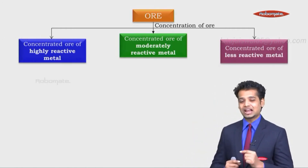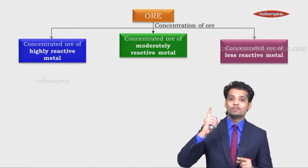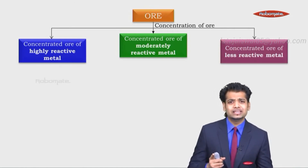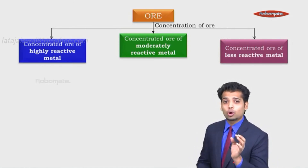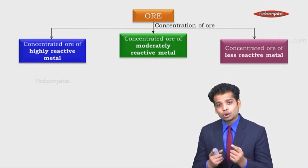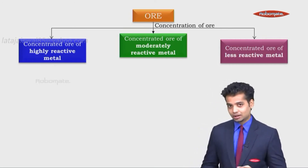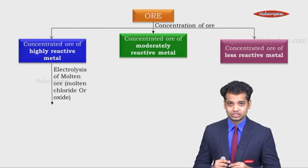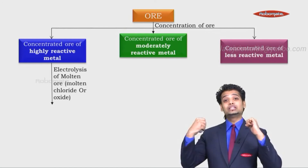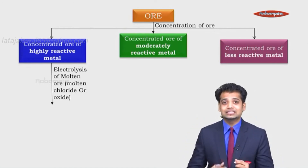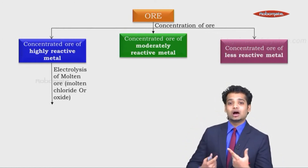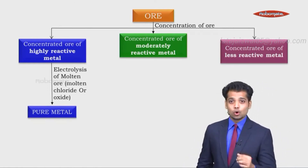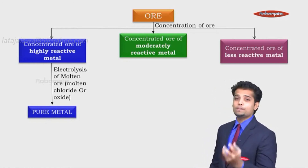Concentrated ore of a highly reactive metal covers every metal from potassium to aluminium. These metals have one shell incomplete and they can be separated using electrolysis — the electric splitting up of molten ore, molten chloride or oxide. What we get after that is a pure metal.